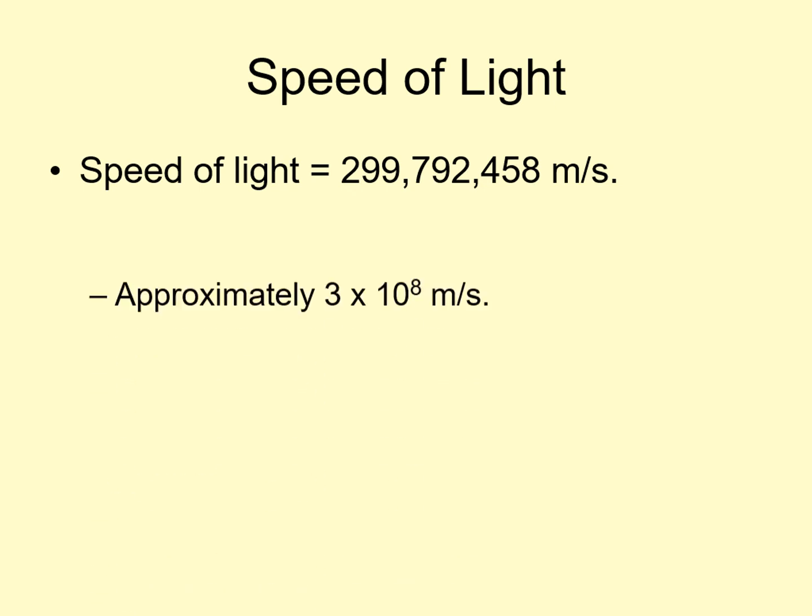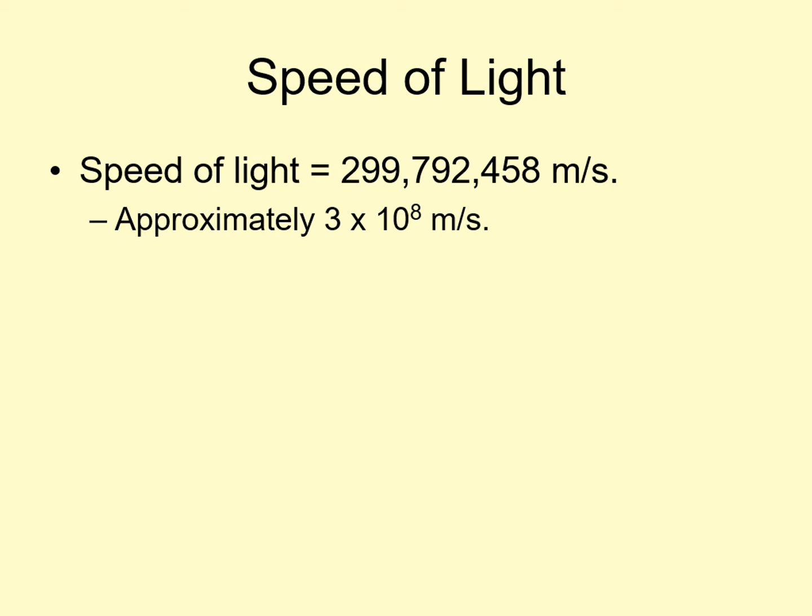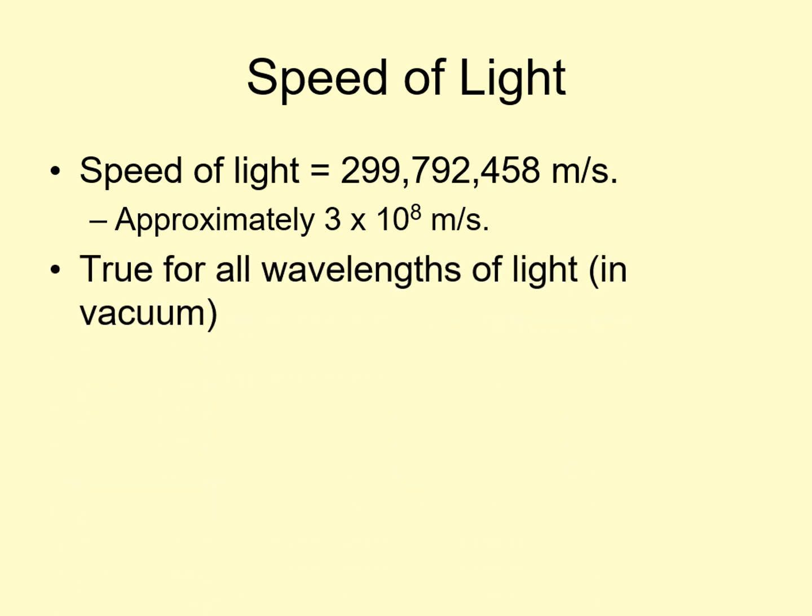This is a good point to come back to the speed of light. We've already mentioned that the speed of light is around 3 times 10 to the 8th meters per second. Here's the more precise number, though rounding it off the way we've done is plenty accurate enough for this class. This speed applies to light of all wavelengths, provided it is moving through a vacuum. If the light is moving through a material, it goes slower than this. How much slower? Depends on the material.